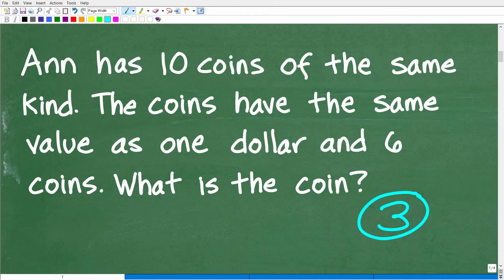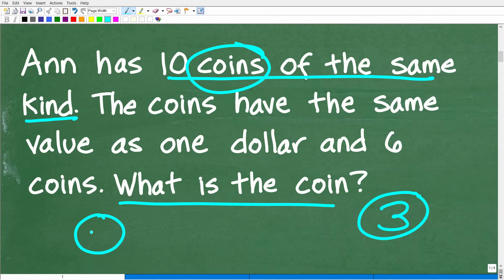All right, so I know I'm kind of long-winded about the rule of three, but it is very important. Okay, so what is the question here? Well, the question is what type of coin does Ann have? So she has 10 coins of the same kind. She has a coin.